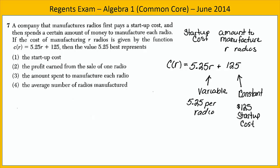The question asks, what does the value 5.25 best represent? $5.25 represents the cost per radio. And so, let's look carefully at the choices. Choice one says the startup cost. The startup cost is represented by $125, so that's not it. Let's look at choice two. The profit earned from the sale of one radio. Well, this has nothing to do with the profit earned from radios. This is the cost to produce them. And so, choice two is not correct. Choice three says the amount spent to manufacture each radio. That sounds right. We're told that R was the number of radios, and 5.25 is the cost to manufacture each one. Let's just read choice four to see if it makes sense. The average number of radios manufactured. Nope, 5.25 is not the average number of radios manufactured. It's the cost to manufacture one radio. And so, our answer is choice three.